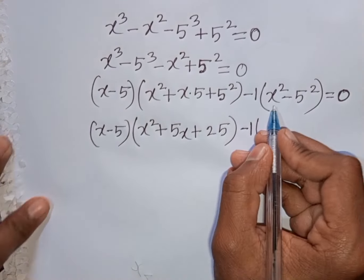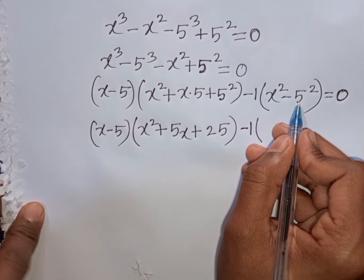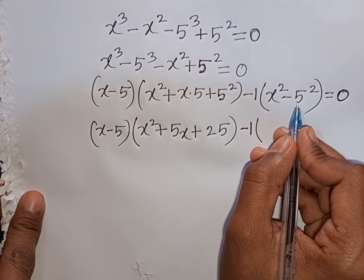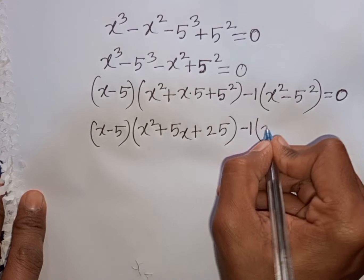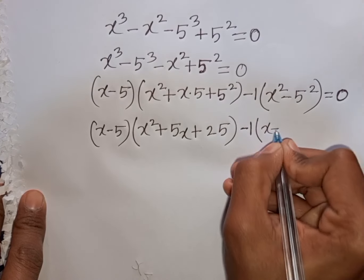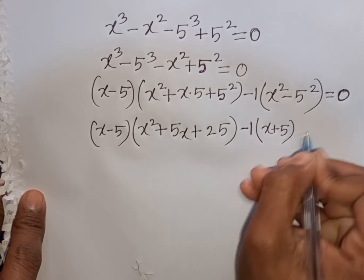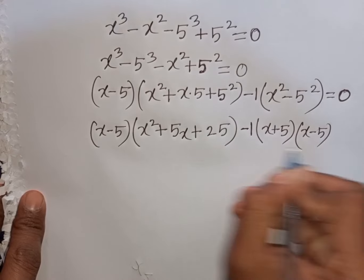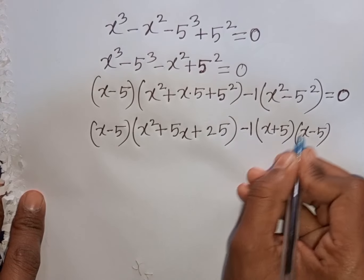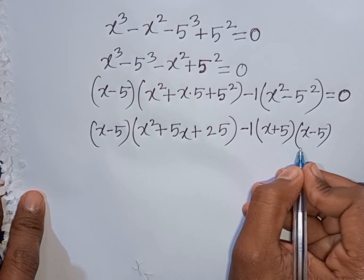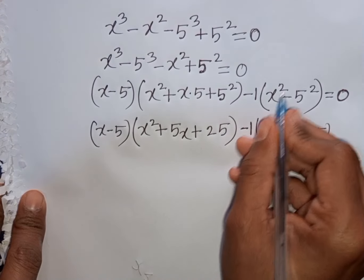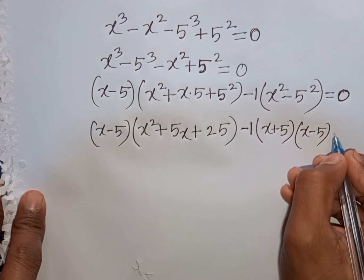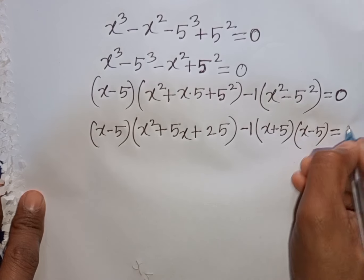Here I can apply the formula of a squared minus b squared. Again, a is x and b is 5. So, according to the formula, I can write x plus 5 times x minus 5. That means a plus b times a minus b — this is the formula of a squared minus b squared. Then equal to 0.